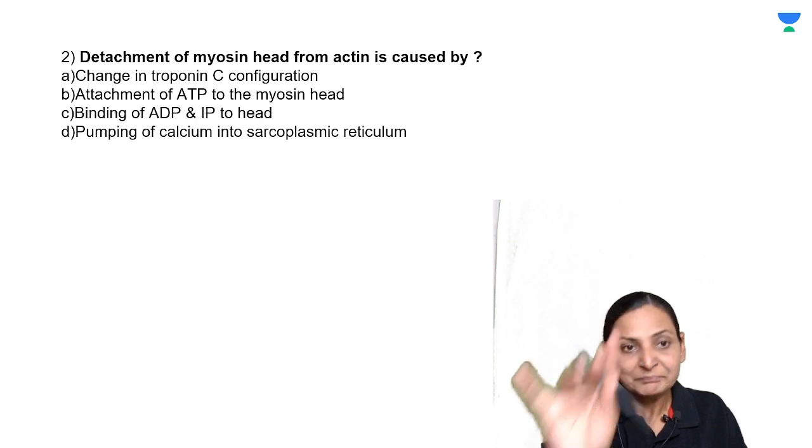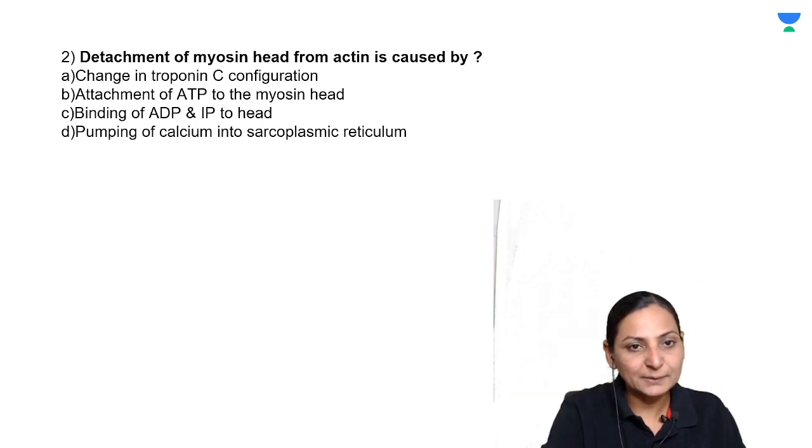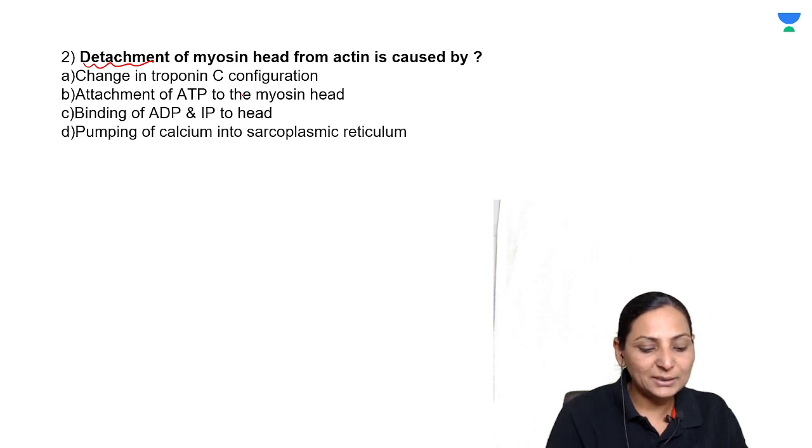Next one: detachment of myosin head from actin is caused by? I'm speaking about detachment. Change in troponin C configuration, attachment of ATP to myosin head, binding of ADP and IP to head, or pumping of calcium into sarcoplasmic reticulum?